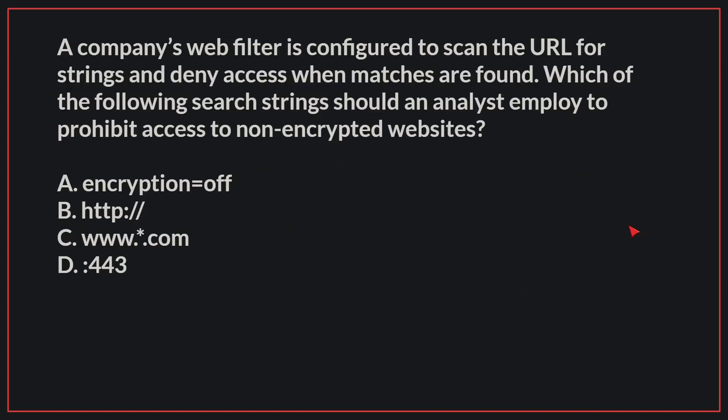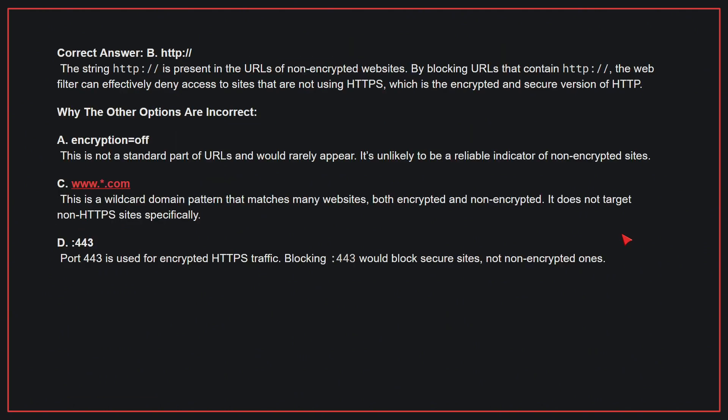A company's web filter is configured to scan the URL for strings and deny access when matches are found. Which of the following search strings should an analyst employ to prohibit access to non-encrypted websites? The correct answer is B: HTTP. The string HTTP is present in the URLs of non-encrypted websites. By blocking URLs that contain HTTP, the web filter can effectively deny access to sites that are not using HTTPS, which is the encrypted and secure version of HTTP.